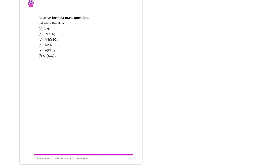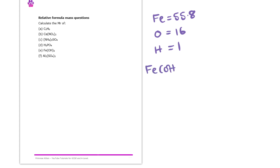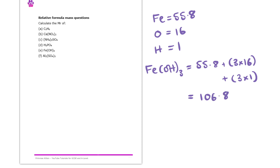Question E is iron hydroxide. Looking at the periodic table, iron has a mass of 55.8, oxygen is 16, and hydrogen is 1. The formula is Fe(OH)₃, so we have just one iron at 55.8, then three oxygens and three hydrogens because of the bracket. Putting all of that into the calculator gives a mass of 106.8, so the Mr of iron(III) hydroxide is 106.8 grams per mole.